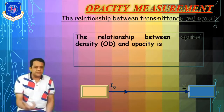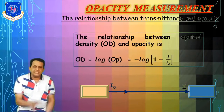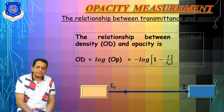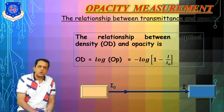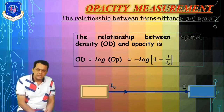There is another term: optical density. Optical density has a relationship with opacity — the log of opacity gives the optical density.